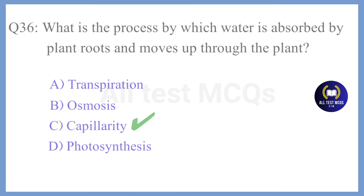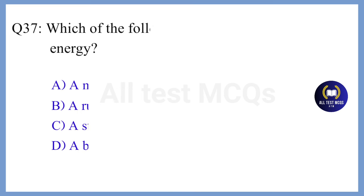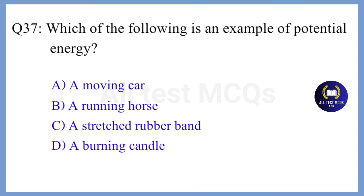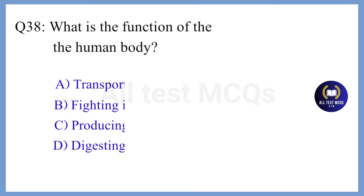Question 37. Which of the following is an example of potential energy? The correct answer is Option C. A stretched rubber band.